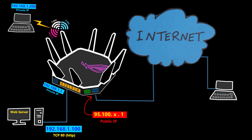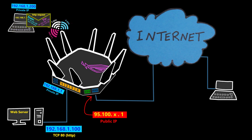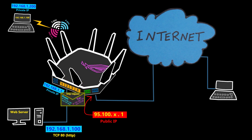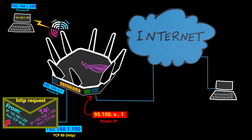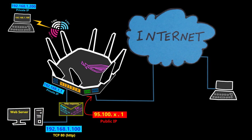If I want to access it from a computer on the same network, I just open a browser and type in the server's IP address, which sends an HTTP request to that IP address on port TCP 80 by default. The destination IP address is valid on this network, so the router forwards the packet to the destination, and the server uses the source IP address and source port number to send an HTTP response back.